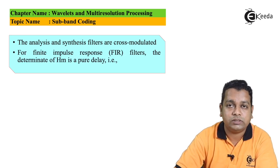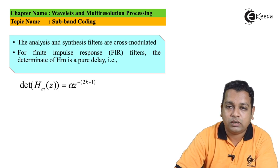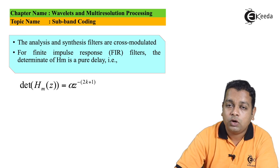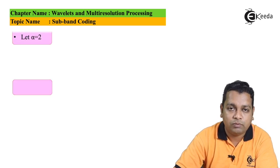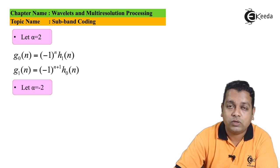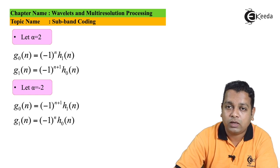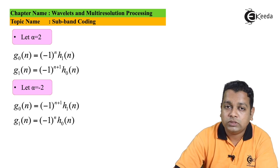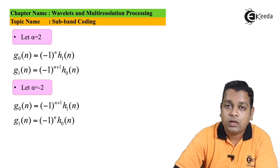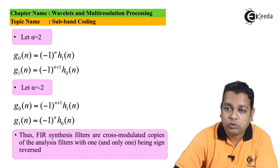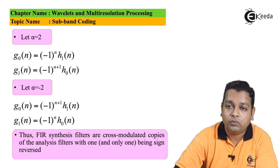For FIR filters, the determinant of H_M is a pure delay: det(H_M(Z)) = α · Z^(−(2k+1)). The exact form of cross-modulation is a function of α. If α = 2: G₀(n) = (−1)ⁿ H₁(n) and G₁(n) = (−1)^(n+1) H₀(n). If α = −2: G₀(n) = (−1)^(n+1) H₁(n) and G₁(n) = (−1)ⁿ H₀(n). Thus the synthesis filters are cross-modulated copies of the analysis filters with one and only one being sign-reversed.